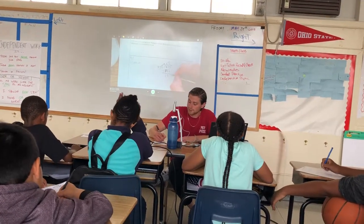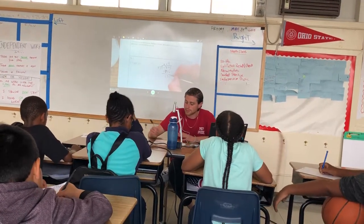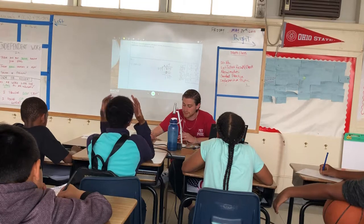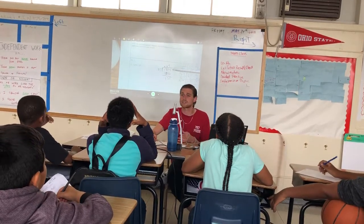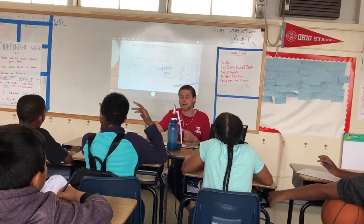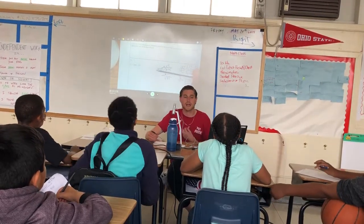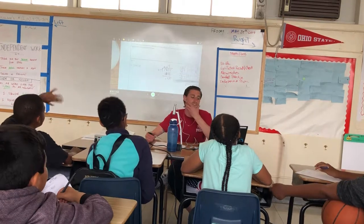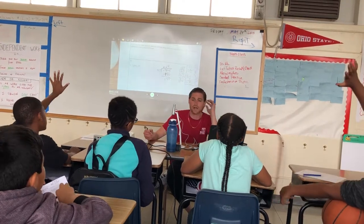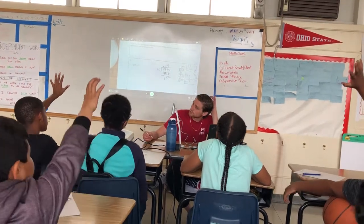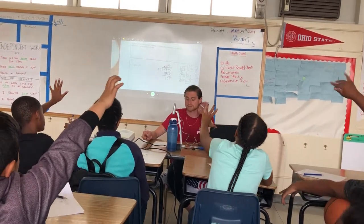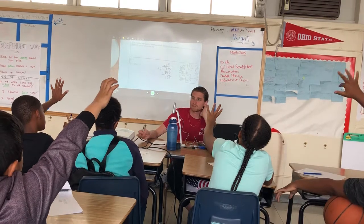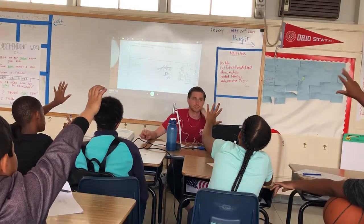Then I bring down the next digit and do it all again until I reach the end. I can see I'm at the last digit of my dividend, so now I ask: how many times can 27 fit inside 135?